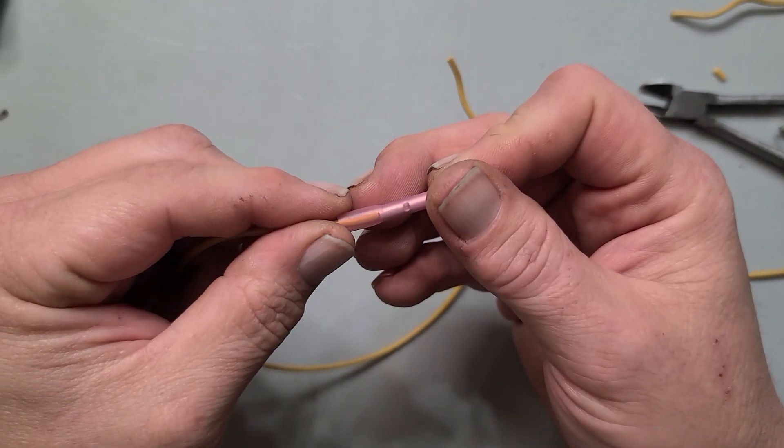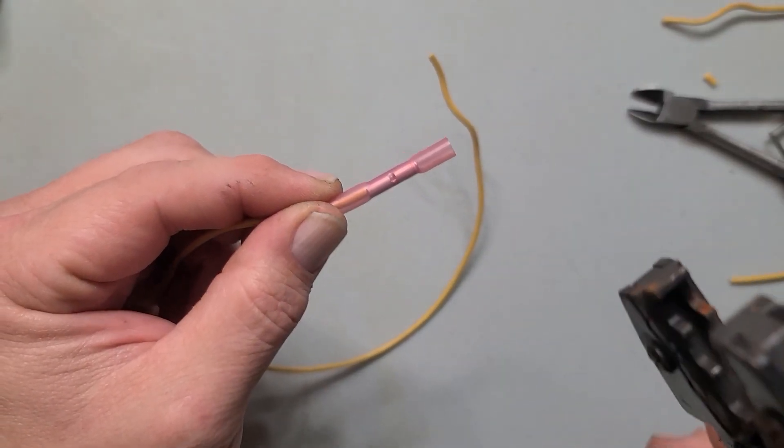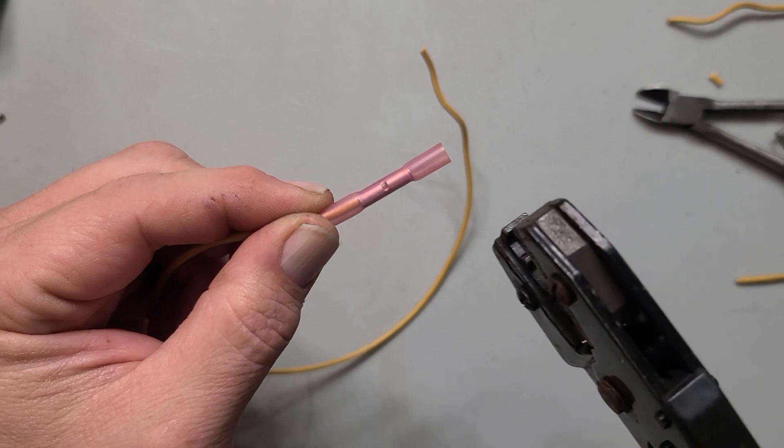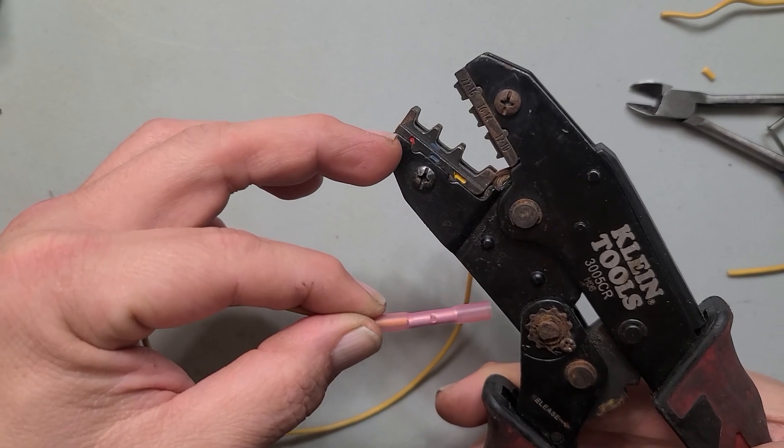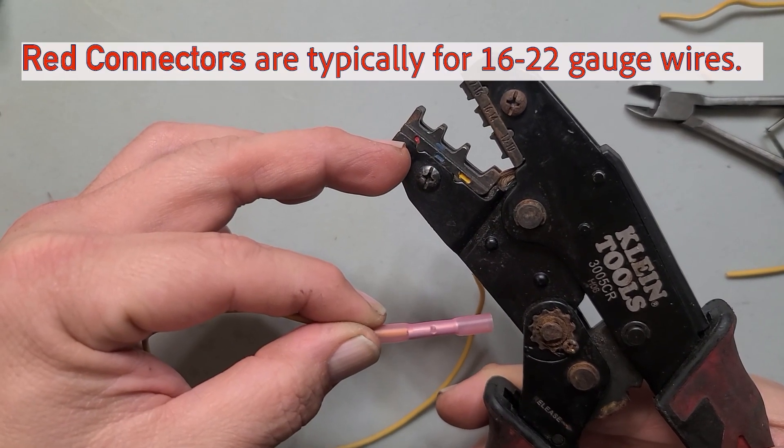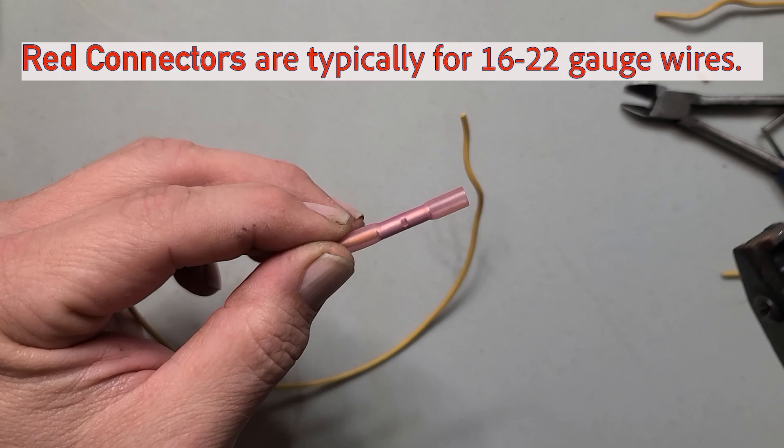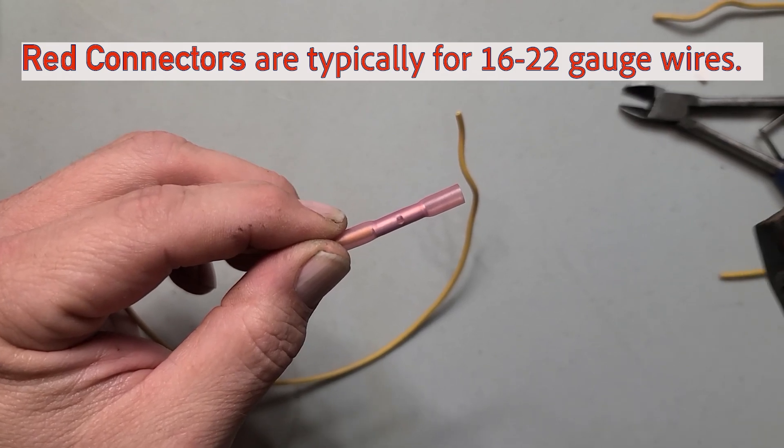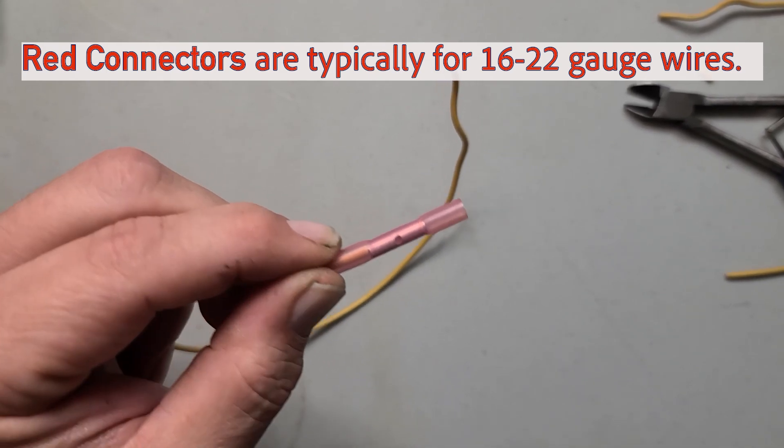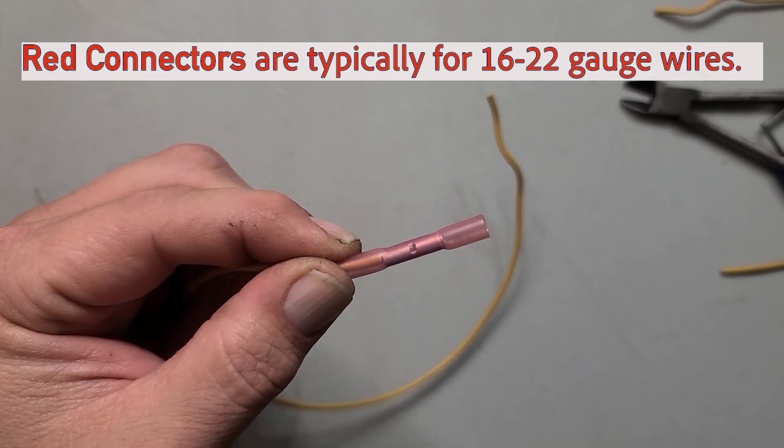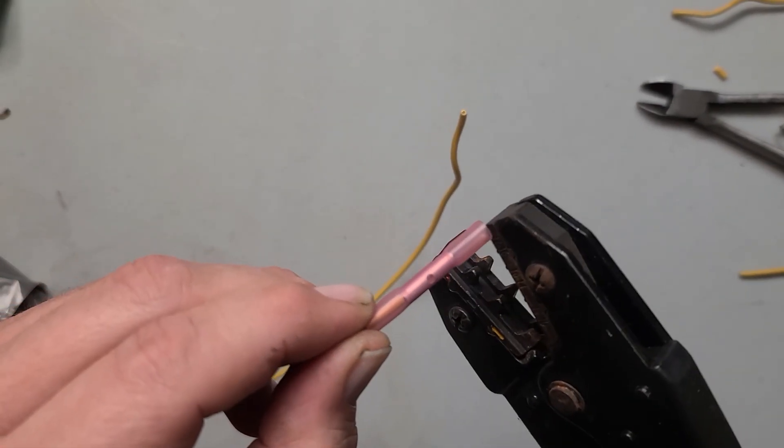You'll grab some crimpers, these are from Klein tools. I'll put a link in the description to the tools that I use for this. These crimpers have different jaw sizes for red, blue, and yellow. Red is the smallest, that's the one you're going to use most on cars because car wires, most of them can be pretty small because they are only concerned with sending voltages like for sensors and computer wires.